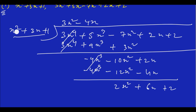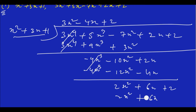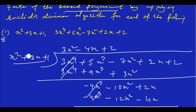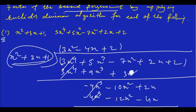We get 2x², with 3x giving 6x, plus 1 giving 2. So the terms are 2x² − 6x + 2. The remainder is 0.